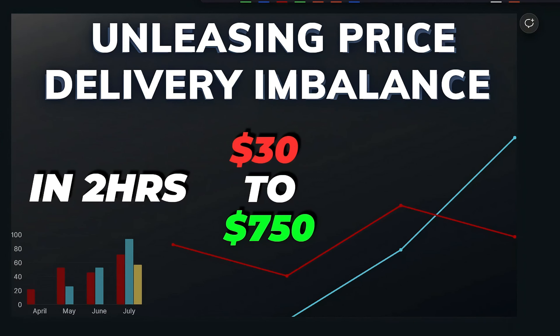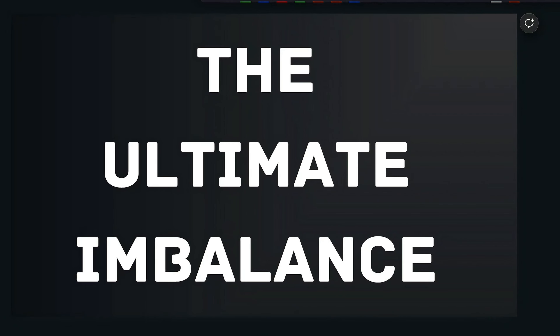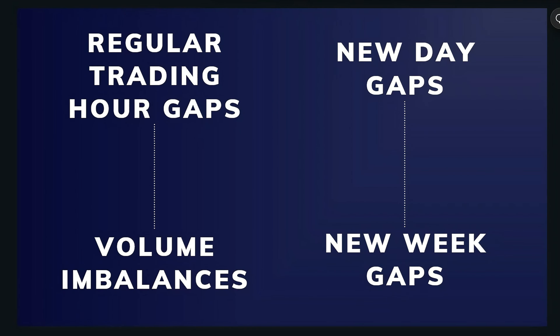What we're going to be going over today is the ultimate imbalance. It will also make the fair value gap look like weak sauce in terms of a draw for price, in terms of resistance and support, and overall just a magnet. We have four different gaps to go over in this video — how to use each one, when to use it, when not to use it, so you can implement it and start making money with it immediately.